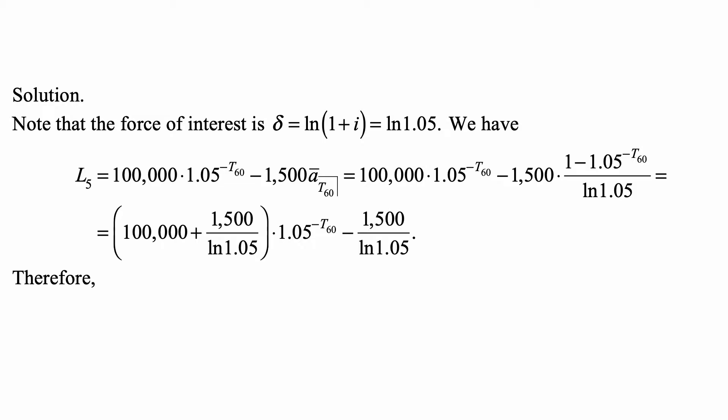That's the same as 100,000 times 1.05 to the minus T₆₀ minus 1,500 times (1 minus 1.05 to the minus T₆₀) over δ, which is the natural logarithm of 1.05. This is the standard formula, 1 minus v to the t over δ, for a continuous annuity.